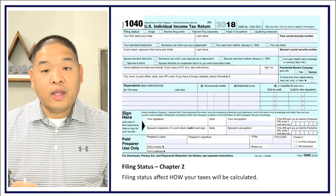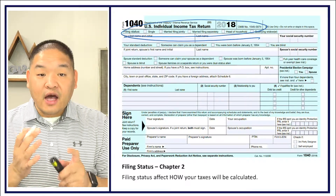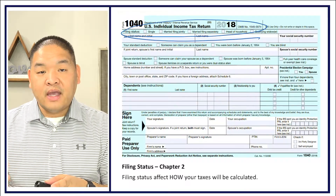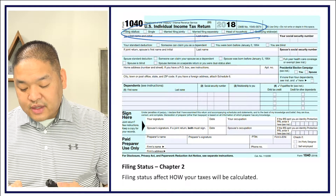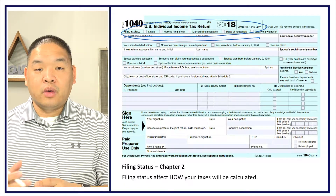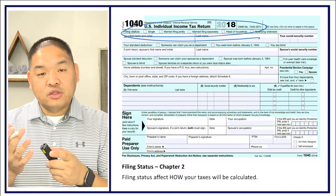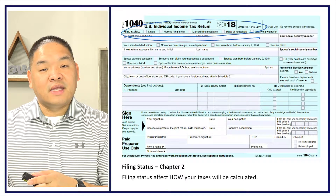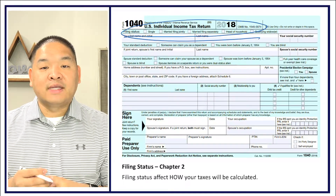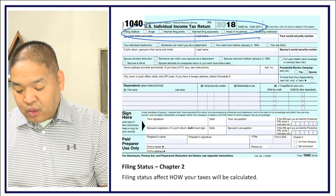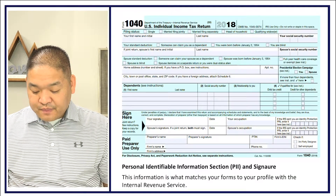The first thing you see on this return is the filing status. Filing status helps determine how your taxes are calculated. Your options are: single, married filing jointly, married filing separately, head of household, and qualifying widower. If you're single you choose single; if married you choose between married filing jointly or separately; single with a dependent can use head of household; and if your spouse recently passed you may qualify as a widower.